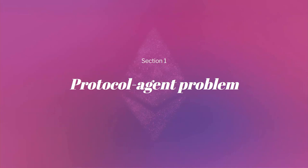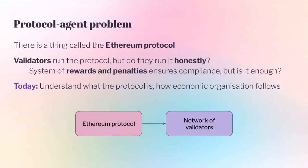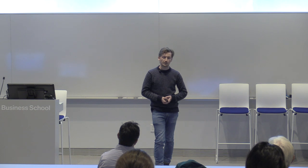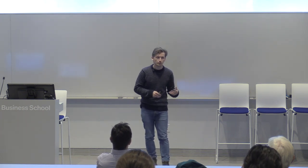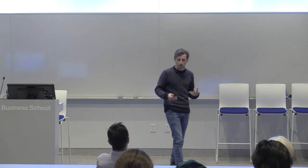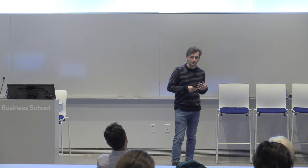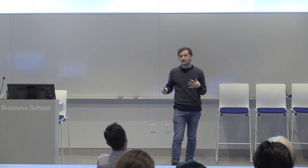The first one I want to talk about is what I call the protocol agent problem. The Ethereum protocol is a set of specifications — what you need to do to be part of that protocol. We have a set of agents called validators that the protocol expects to run honestly. Is following the Ethereum protocol the rational behavior for validators? We have a system of rewards and penalties to ensure that people act as the protocol wants them to do. But is that enough? I want to understand what the protocol is, what its boundaries are, and how the economic organization of these participating agents follows from that.